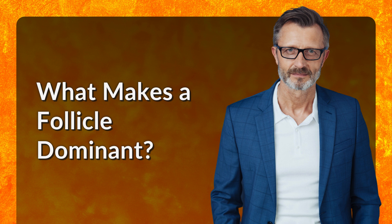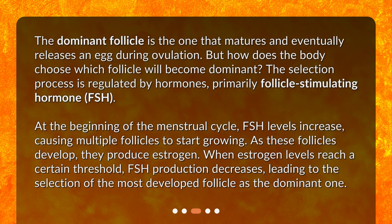What makes a follicle dominant? The dominant follicle is the one that matures and eventually releases an egg during ovulation. The selection process is regulated by hormones, primarily follicle-stimulating hormone, FSH. At the beginning of the menstrual cycle, FSH levels increase, causing multiple follicles to start growing. As these follicles develop, they produce estrogen. When estrogen levels reach a certain threshold, FSH production decreases, leading to the selection of the most developed follicle as the dominant one.